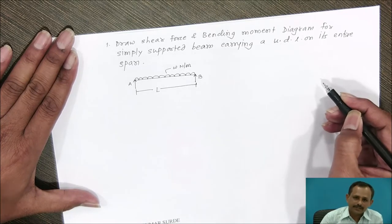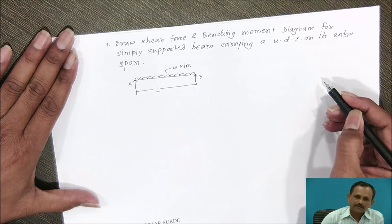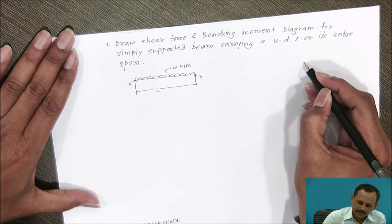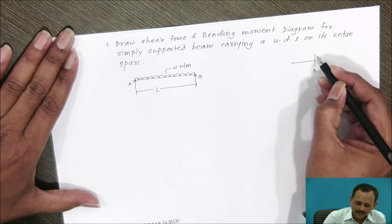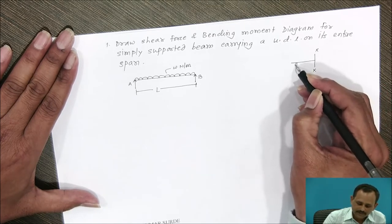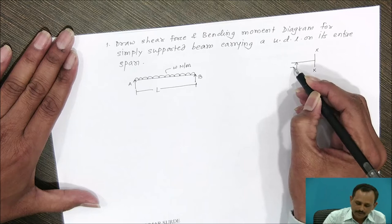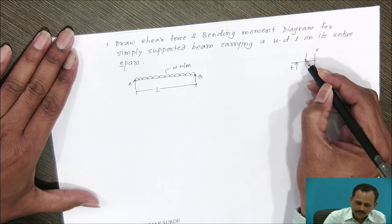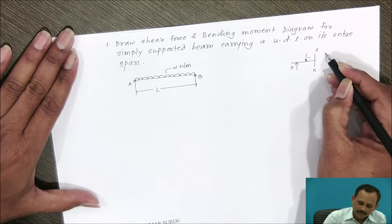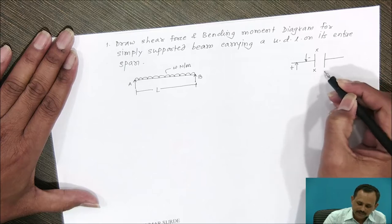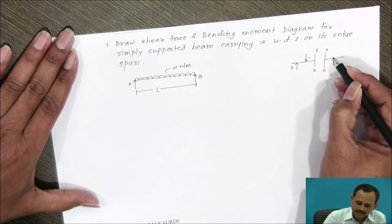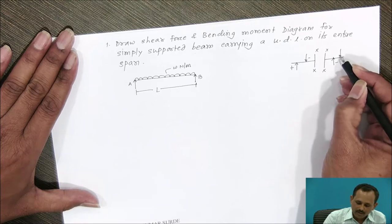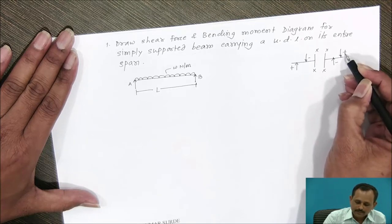Before we proceed, we will discuss the conventions for shear force and bending moment. If you are referring to the left side of the section, all upward forces are considered to be positive and downward forces are considered to be negative. When you refer to the right side of the section, all upward forces are considered to be negative and all downward forces are considered to be positive.